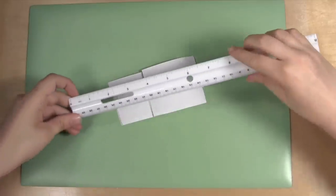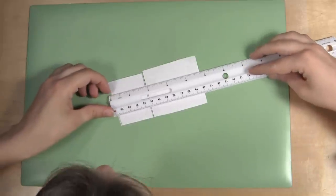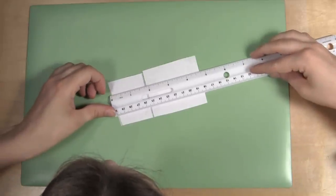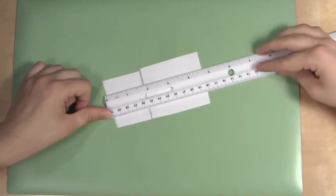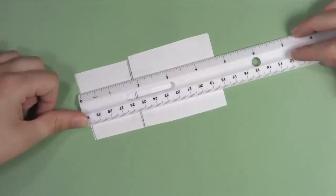Place the ruler on top of the paper strips and line up the zero marker with one end of the paper watch band. Read the measurement where the other end of the paper watch band stops. This is the length of your watch band.